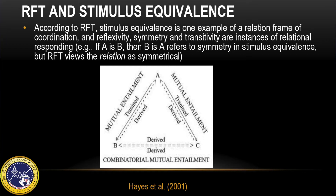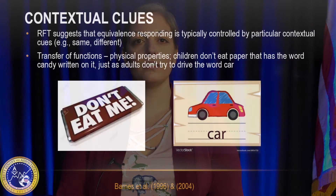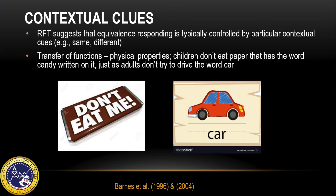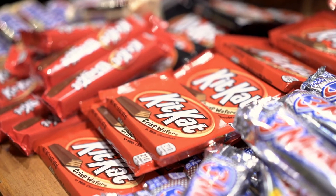According to RFT, therefore, both transitivity and equivalence responding are instances of combinatorial entailment in which the trained relations are the same as the derived relations. Another key component to RFT is that of contextual cues. RFT suggests that equivalence responding is typically controlled by particular contextual cues, such as 'same as,' 'different than,' etc. RFT also encompasses what's termed transfer of functions and addresses physical properties, whereas stimulus equivalence does not explicitly do so. For example, in stimulus equivalence, reflexivity states that a piece of candy is equivalent to the word 'candy' written on a piece of paper. However, it's evident that just because a piece of paper says 'candy,' it does not mean that it is actually an edible candy. The transfer of function, where different physical properties serve different physical functions, certainly influences future responding to these stimuli.